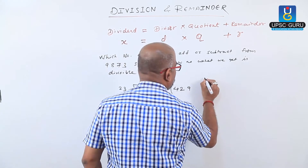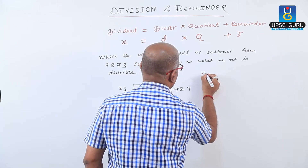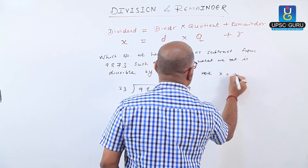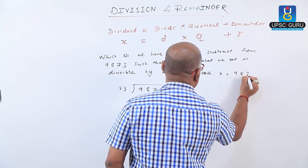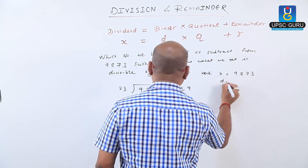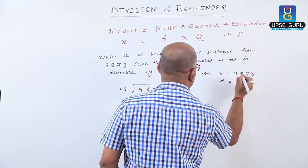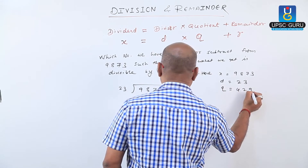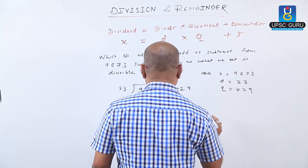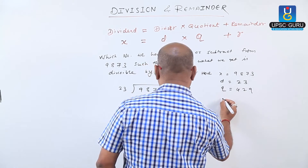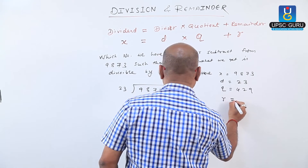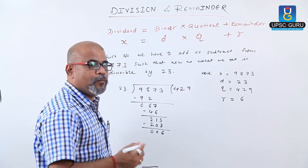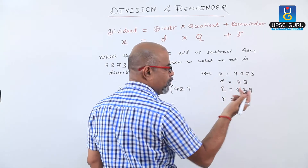Now here, X equals 9873, D equals 23, Q equals 429, and the remainder R is 6.